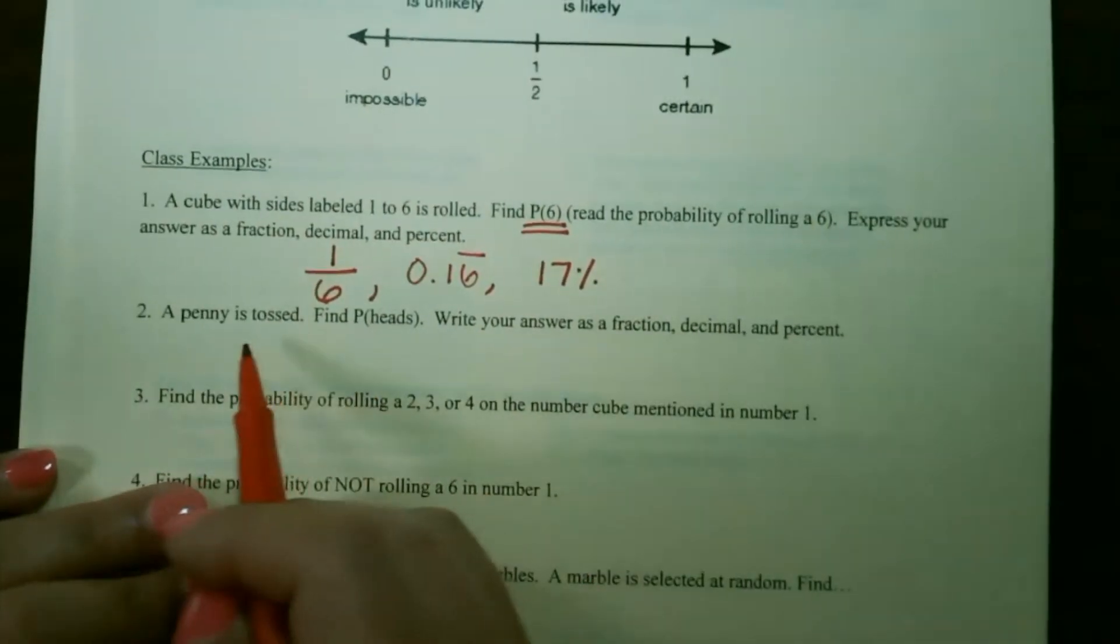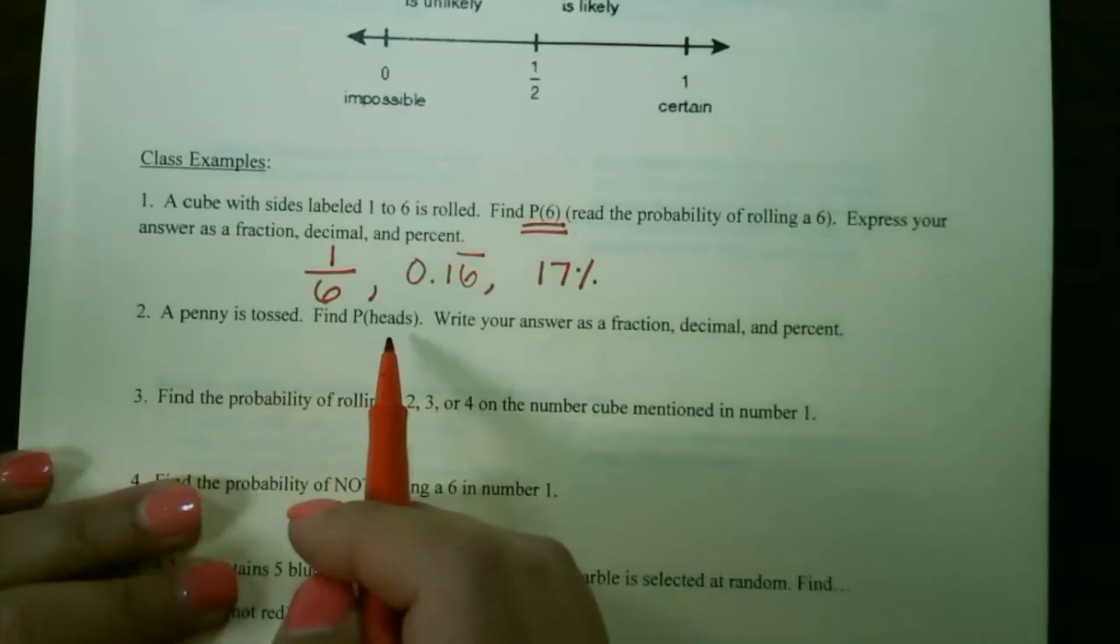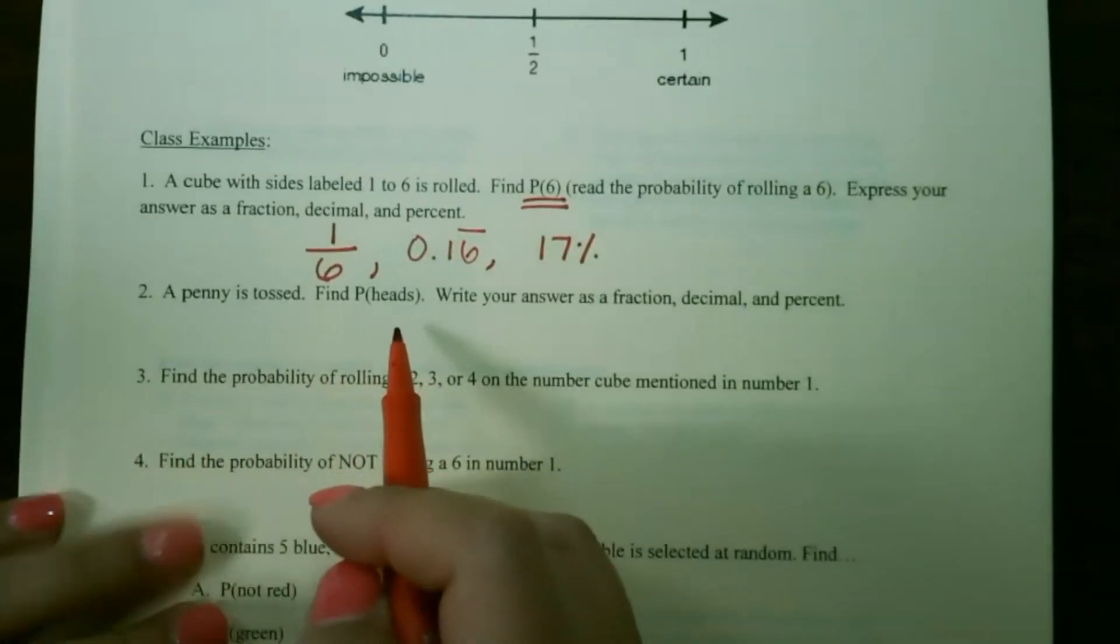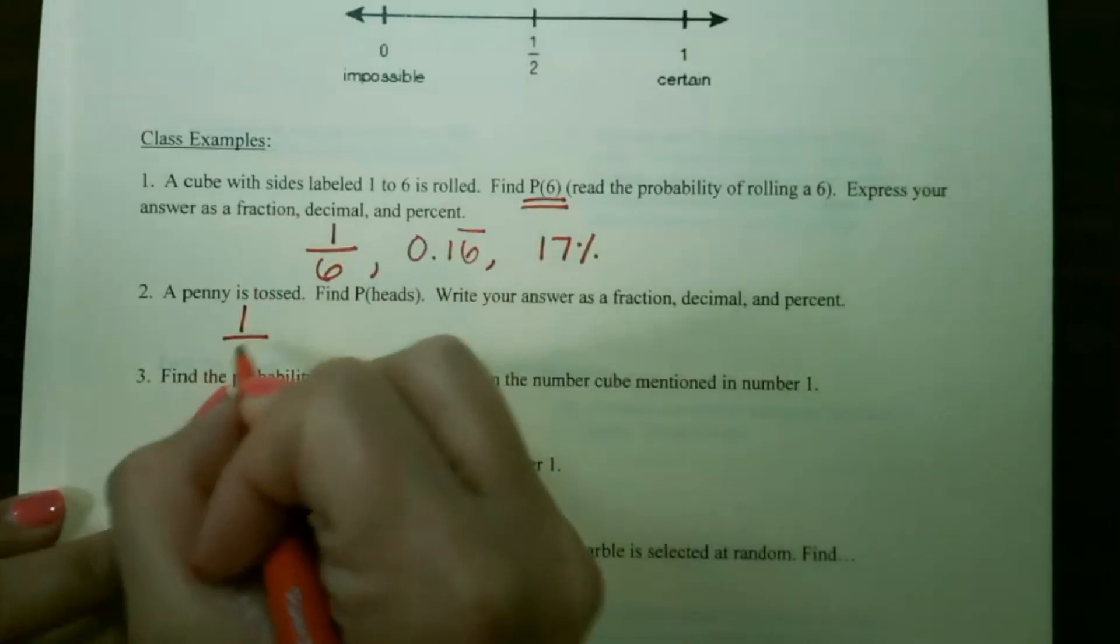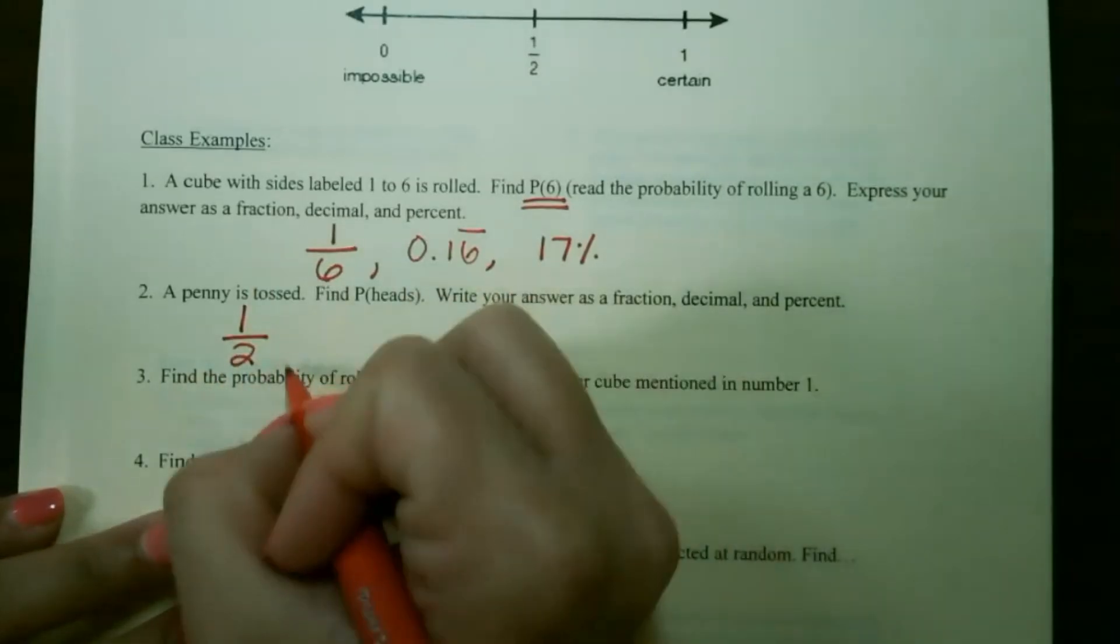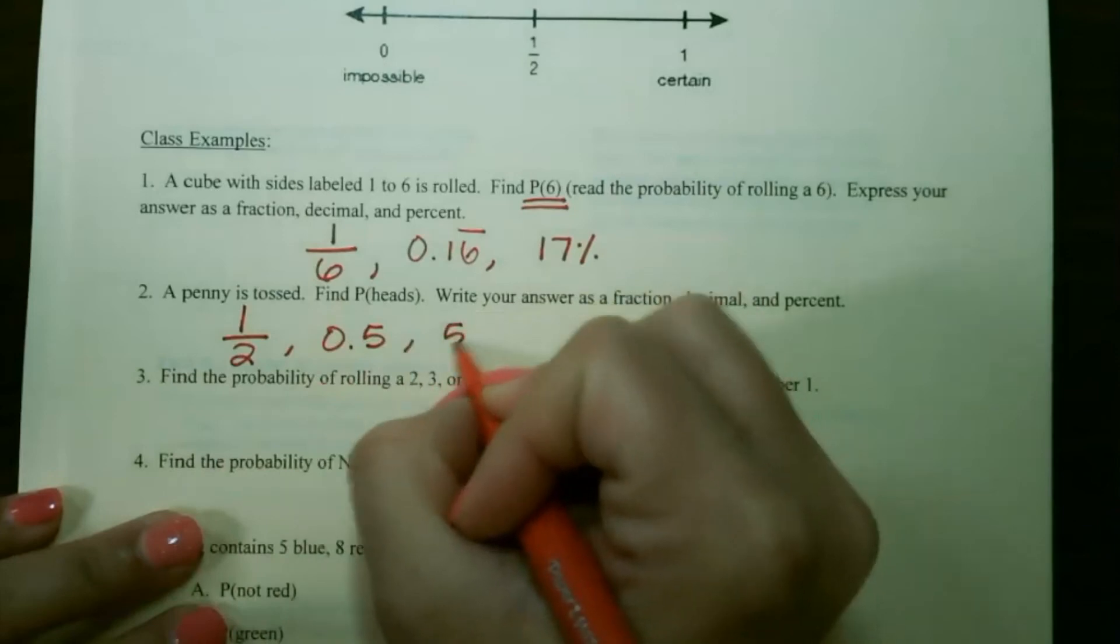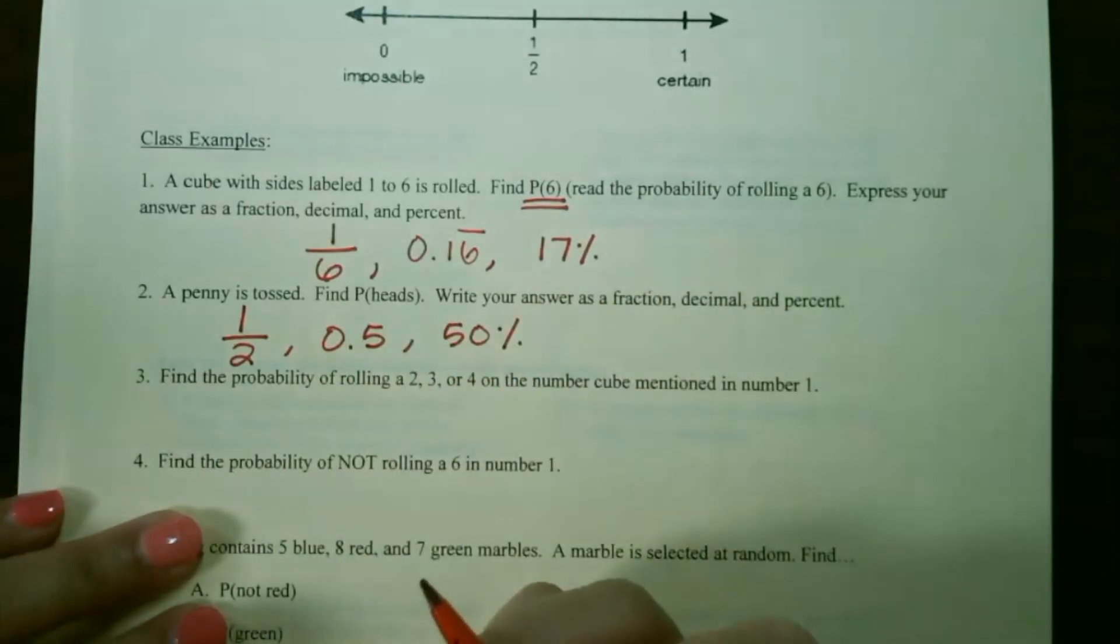For our next example, a penny is tossed. Find the probability of heads. Write it as a fraction, decimal, and percent. So I can only get heads one time out of two total outcomes, which would be 1/2, 0.5 as a decimal and 50 percent chance.